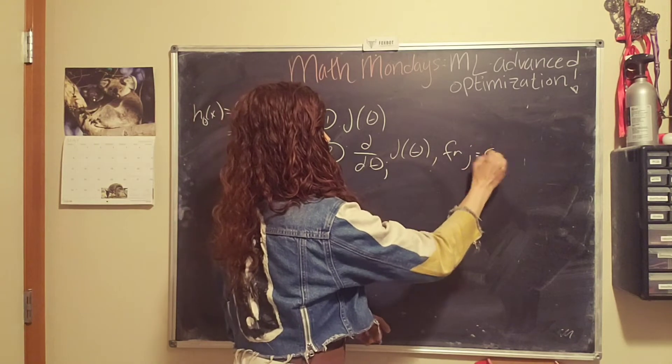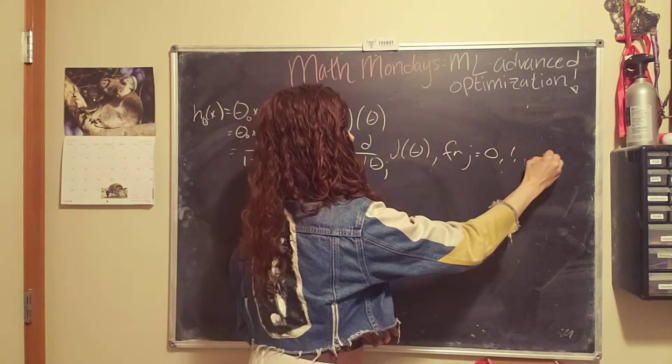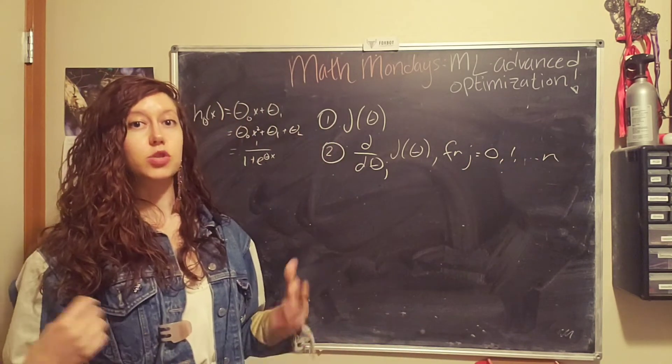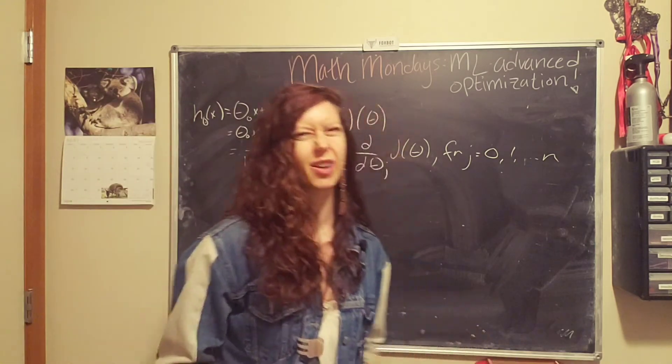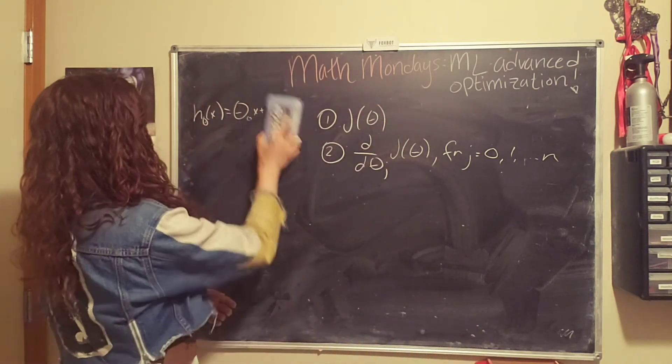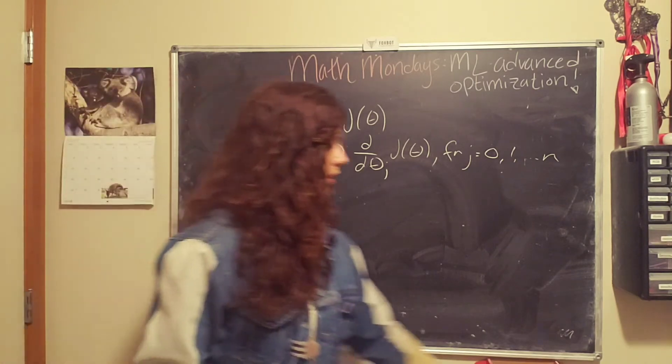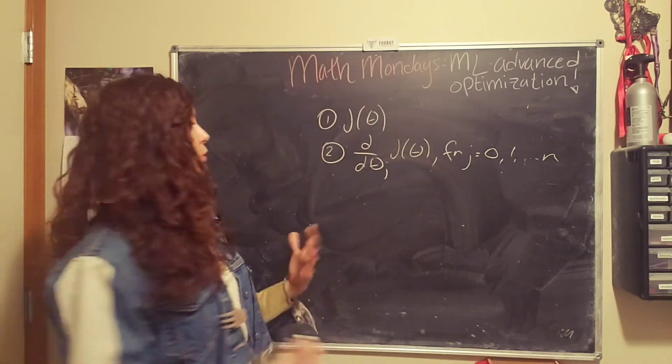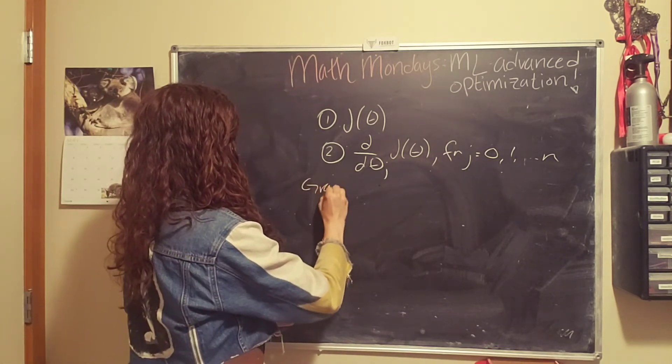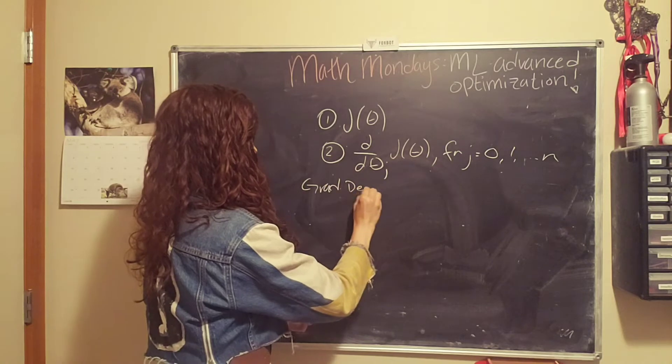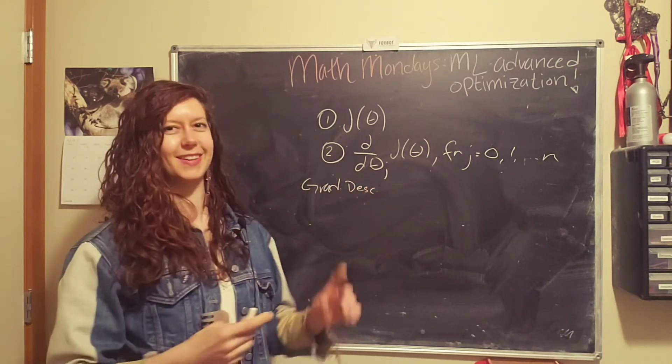And then we find the partial derivative of our cost function with respect to each parameter theta, which looks like this. So for j equals 0, 1, all the way to n, where n is the total number of parameters in our cost function, or really in our hypothesis function.